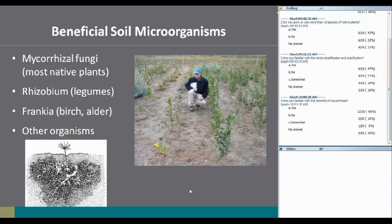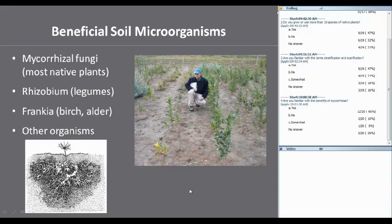Just a few quick words about rhizobium — people that grow peas and beans in their garden buy the inoculum for those. Lupins are legumes too, and there are many other legumes that will do a lot better with rhizobium inoculation. Frankia is one of those microorganisms that's wonderful because there are lots of spores in the air — anytime you grow a birch or an alder, if you pull the roots out and look at them, they'll almost all be colonized with Frankia. However, if you're using too much fungicide or fertilizer in the nursery, you can impede those.